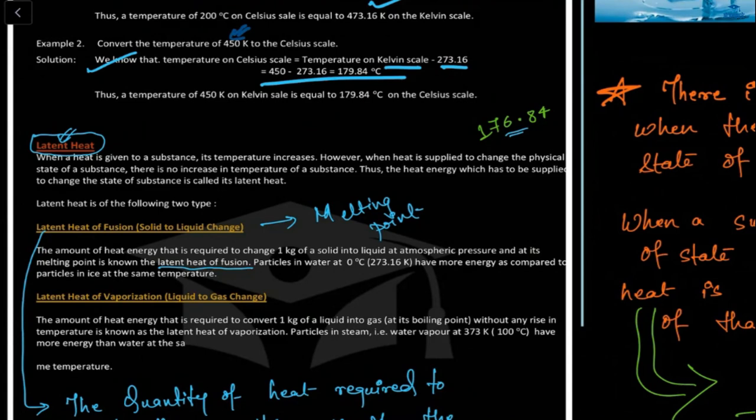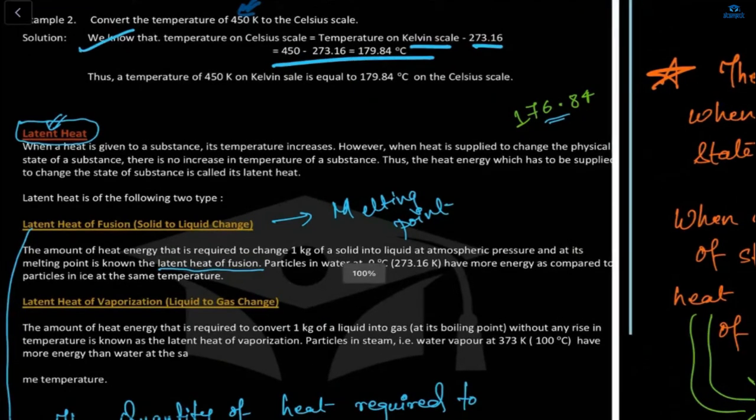Latent heat is like when you heat something and it reaches its boiling point — the temperature remains constant. That is because of latent heat.